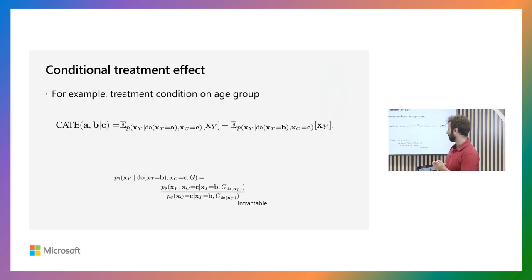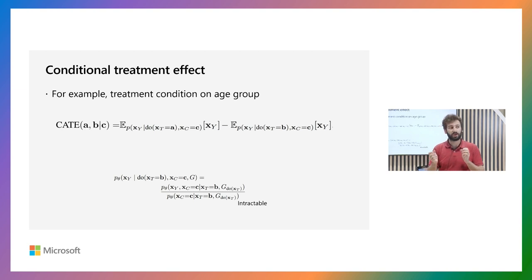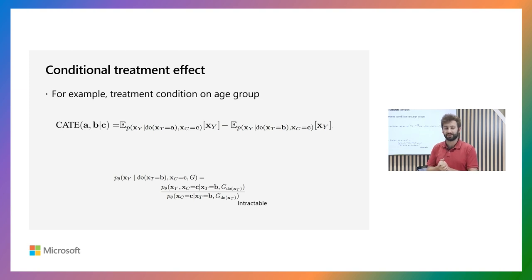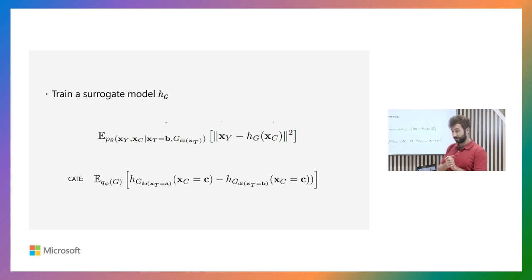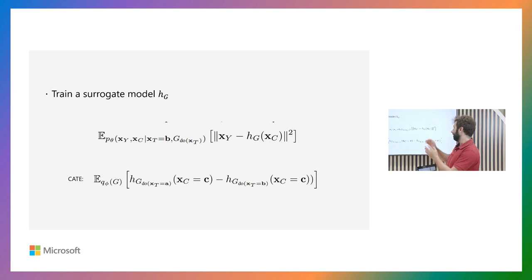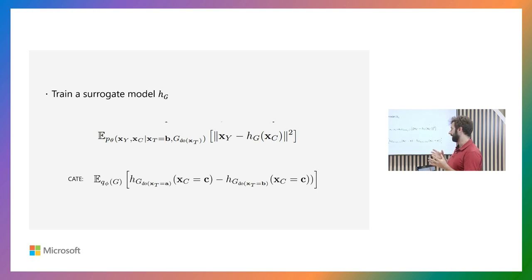However, if you want a conditional average treatment effect where your conditioning variable is not necessarily upstream of your outcome, this doesn't become easy — you would need to apply Bayes' rule to get the probabilities, which is very intractable. What we do instead is simply train a surrogate model: we sample multiple samples from our interventional distribution and then learn a surrogate model that predicts the outcome from our conditioning variable. Using this, we can estimate our CATE by just plugging in our conditioning variable.